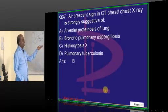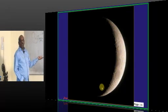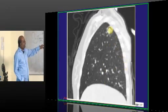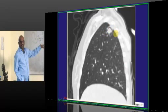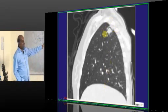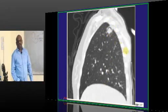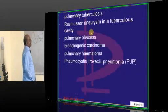Where do you see air crescent sign? You see a crescent moon appearance. Whenever Aspergillosis is present, there is a gas-filled ball leading to the air crescent sign — that is what you have to basically appreciate.